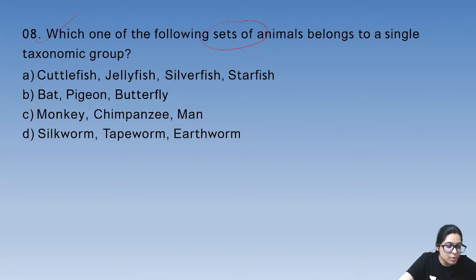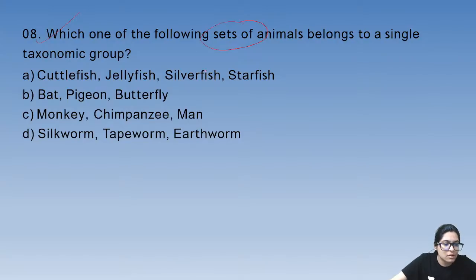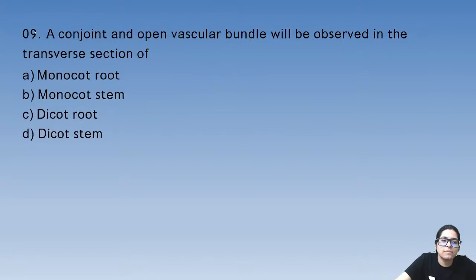Which set of animals belongs to a single taxonomic group? It is monkey, chimpanzee, and man — they are all primates.